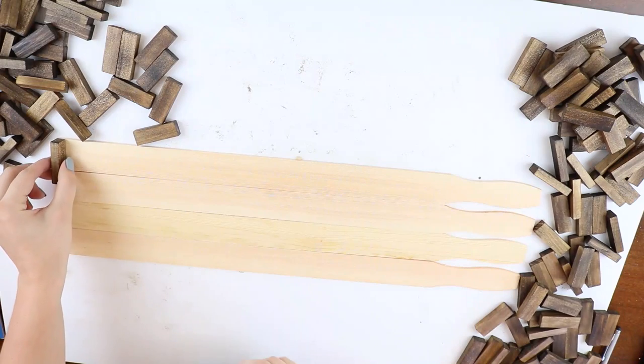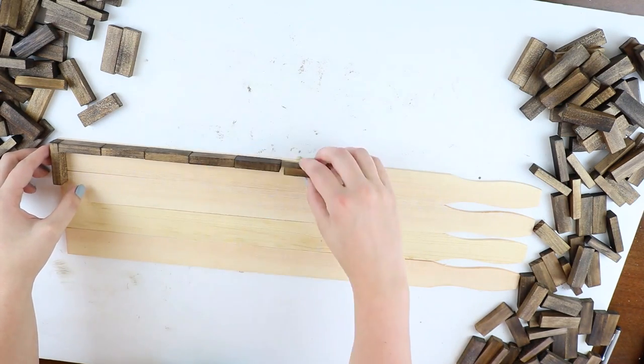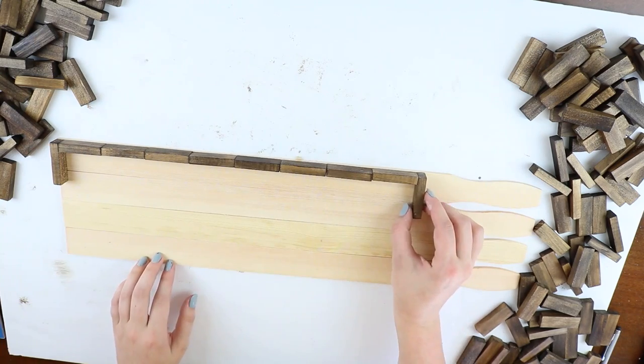For the base, we used four stir sticks. You'll want to line out the blocks just to see where you need to cut the stir sticks. We ended up doing eight blocks long and three blocks wide.